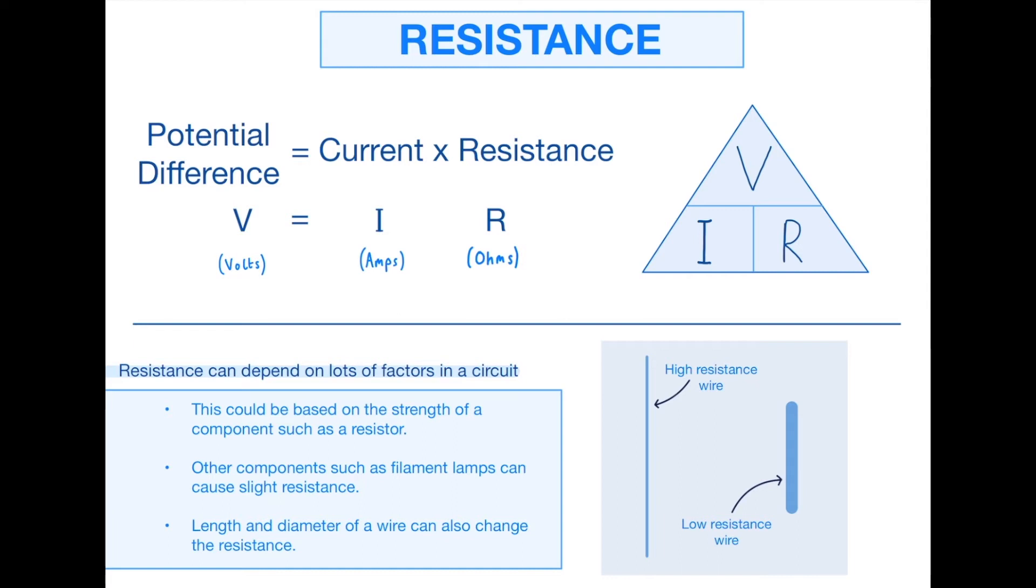At the bottom here, resistance can depend on lots of factors in a circuit. It could be based on the strength of a component such as a resistor. If you've got a resistor in your circuit, it's going to increase the resistance, but it could also be increased by something like a filament lamp which could cause slight resistance. At a slightly higher level, the length and the diameter of a wire can also change the resistance. Again, in real life, imagine it like the traffic and all the cars on the road. If you've got 100 cars trying to go through a really long thin road, it's going to take longer than if you're on a motorway that has four lanes. Just remember the traffic analogy for remembering everything to do with wires.